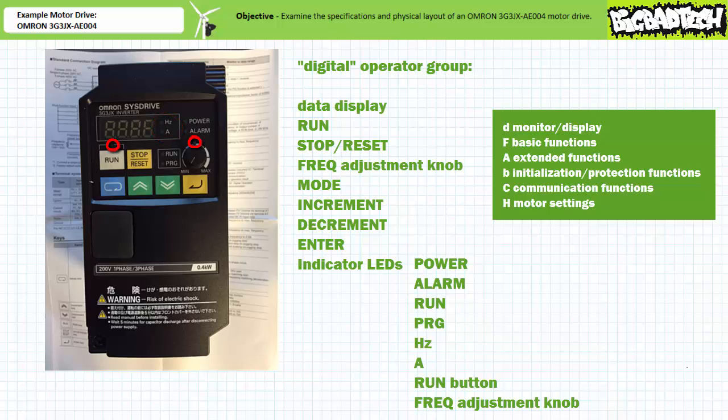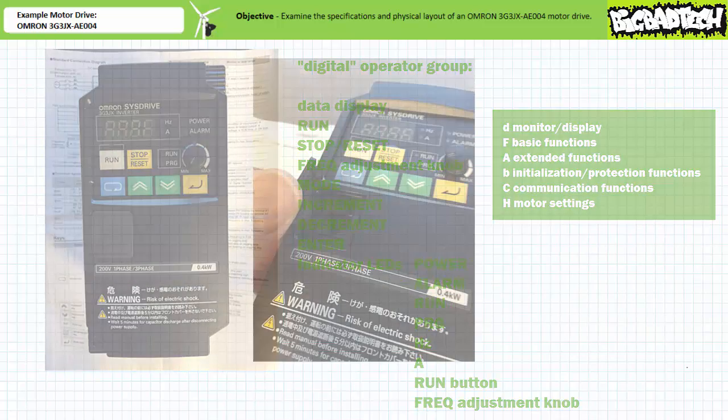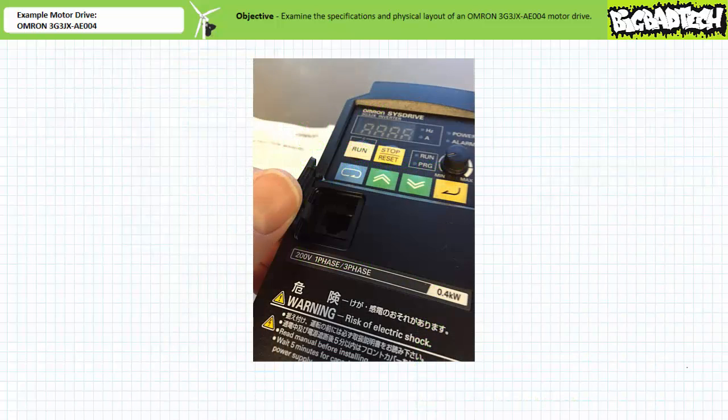Finally, the LEDs above the run button and the frequency adjustment knob are lit when the motor drive is programmed to allow manual direct operation using elements within the digital operator group. If these LEDs are not lit, the motor drive is under remote control. The front panel also includes an accessory RJ45 jack communications port under a cover.